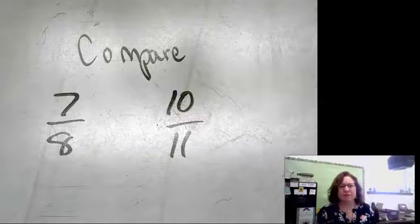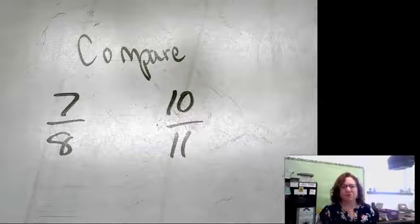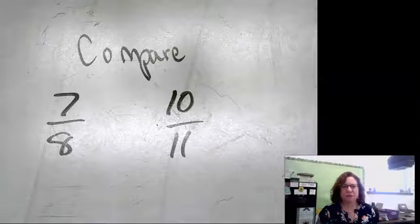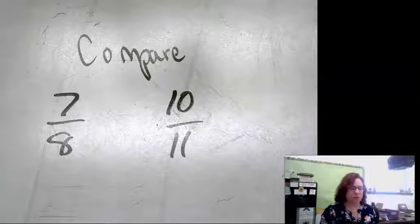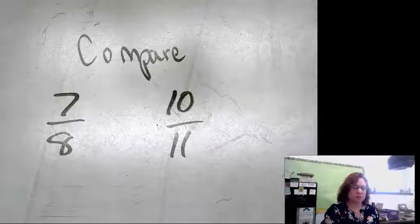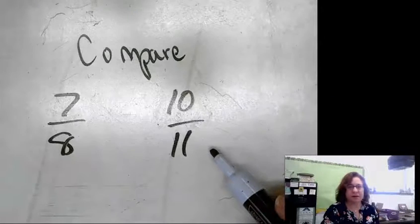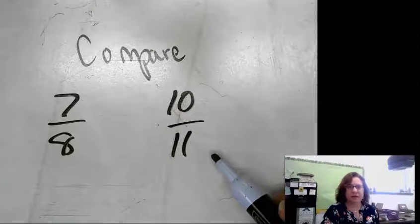You're checking your independent practice and you were told to compare 7 eighths with 10 elevenths. The lowest common denominator I can think of would be 88.